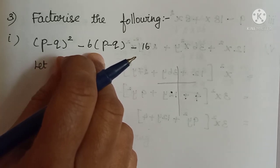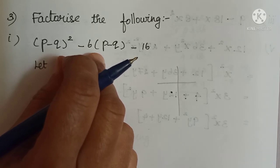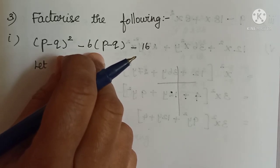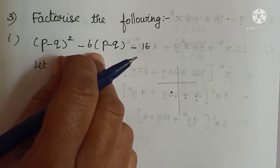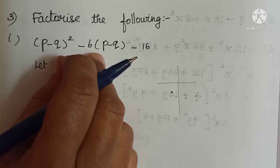We have 6 problems and there are 6 different methods. The methods are applied in the previous 2 Romans. In each problem, you have to think and then solve.